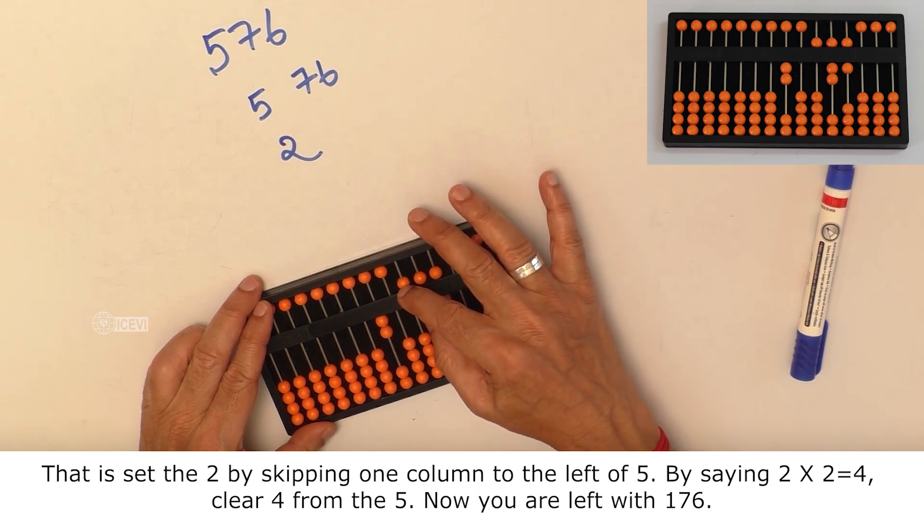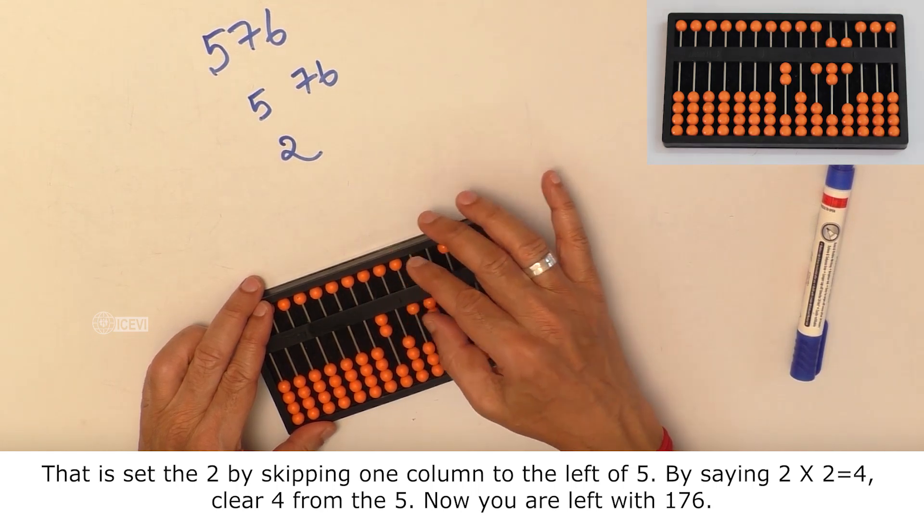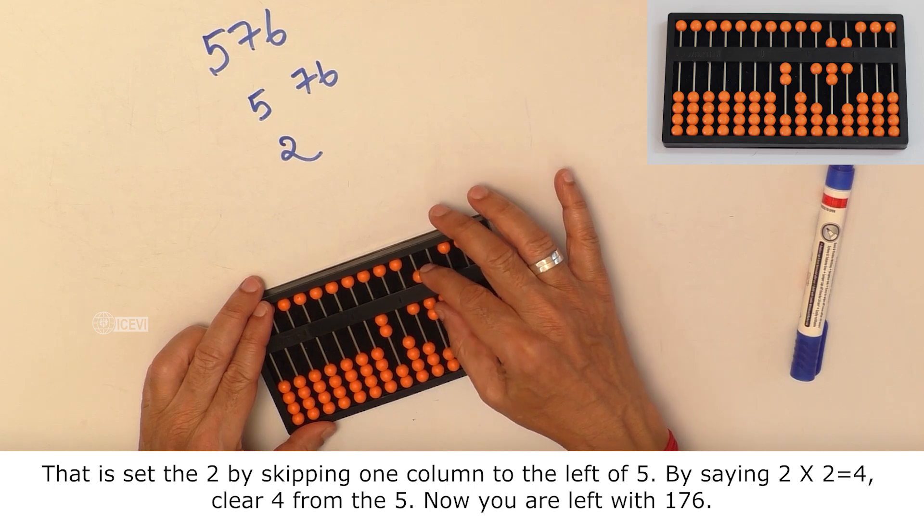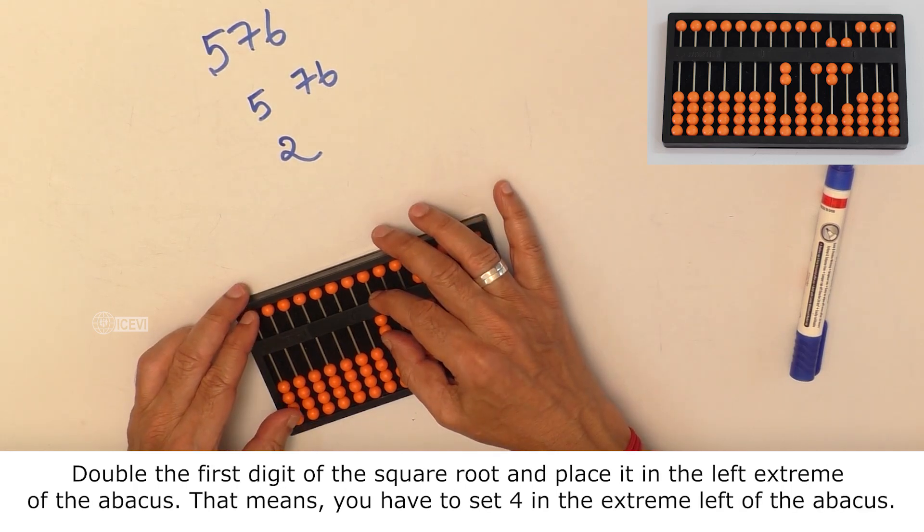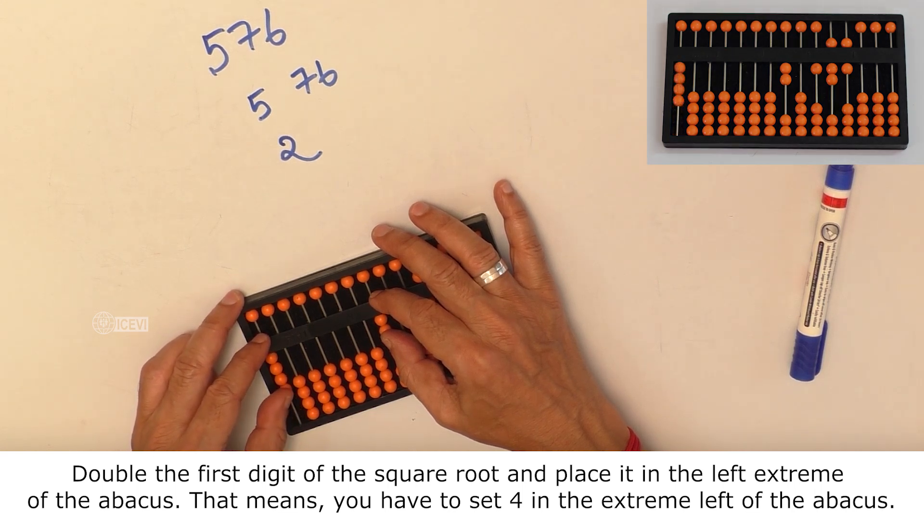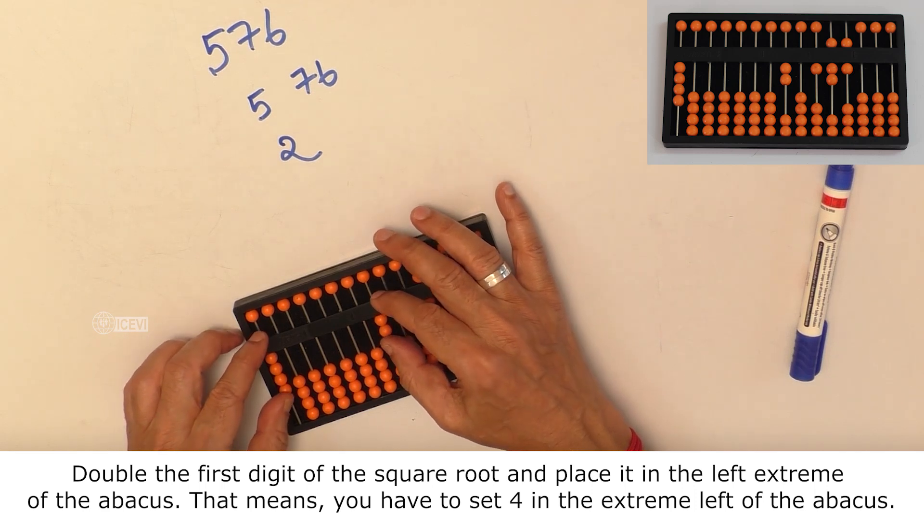Clear 4 from 5 and now you are left with 176. Double the first digit of the square root and place it in the extreme left of the Abacus. That means, you have to set 4 in the extreme left of the Abacus.